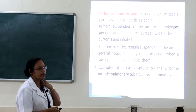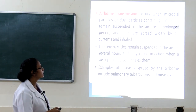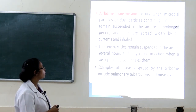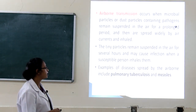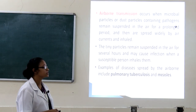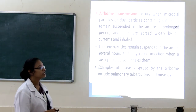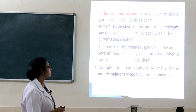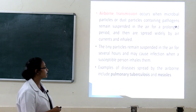Airborne transmission occurs when microbial or dust particles containing pathogens remain suspended in the air for a prolonged period and are spread widely by air currents and inhaled. These tiny particles can remain suspended for several hours and may cause infection when inhaled by a susceptible person. Examples of airborne transmission include pulmonary tuberculosis (TB) and measles.